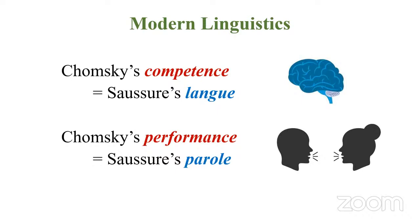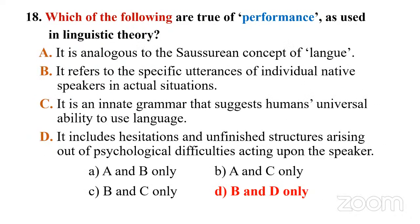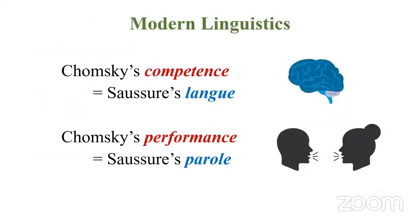With this understanding, going back to the question is straightforward. Statement A — performance is analogous to Saussure's langue — is wrong; langue relates to competence, not performance. Statement B is correct. Statement C — innate grammar — does not describe performance. So the answer is B and D only.